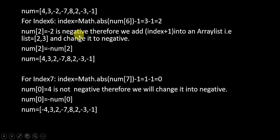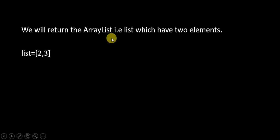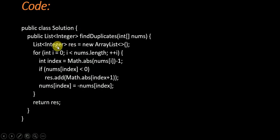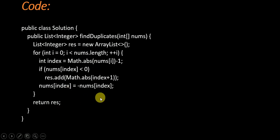For index 7, we find the absolute index and apply the same procedure; the element is not already negative so no duplicate found. Finally we return the array list containing [2, 3]. Now we will see the code: we implement our array list, iterate the loop from 0 to array length, find the absolute index using the formula, check whether the element at that index is negative — if so, add index plus 1 to the list — then negate the value at that index. Time complexity is O(n).